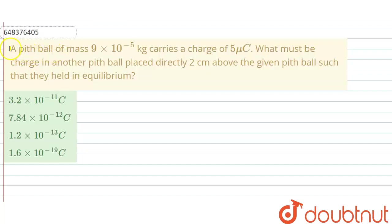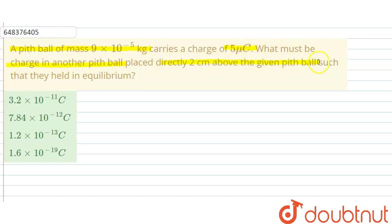Hello students. In this question, it is given that a pith ball of mass 9×10⁻⁵ kg carries a charge of 5 micro coulomb. What must be the charge on another pith ball placed directly 2 cm above the given pith ball, such that they are held in equilibrium?